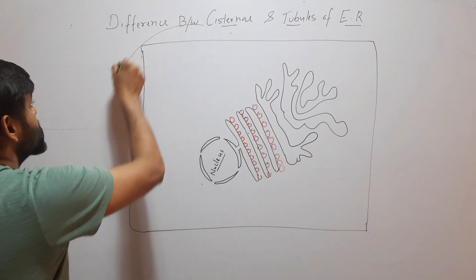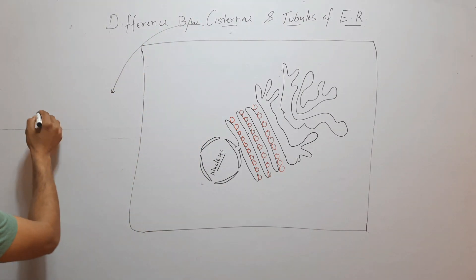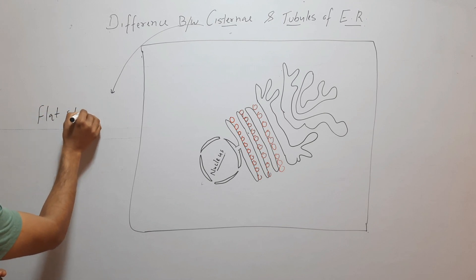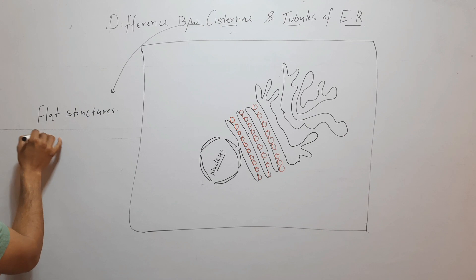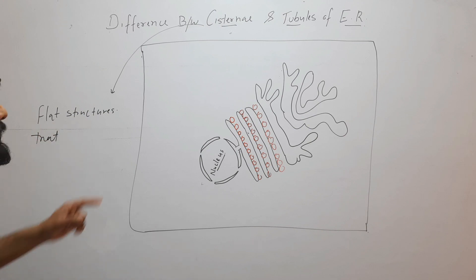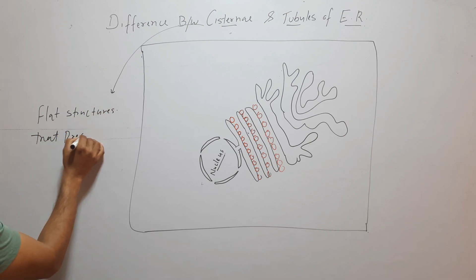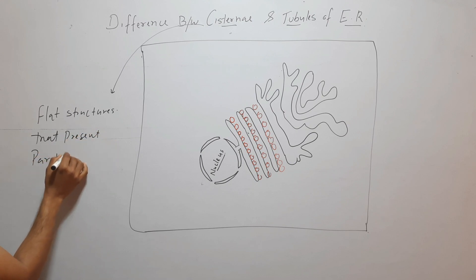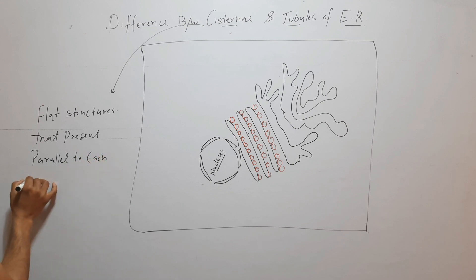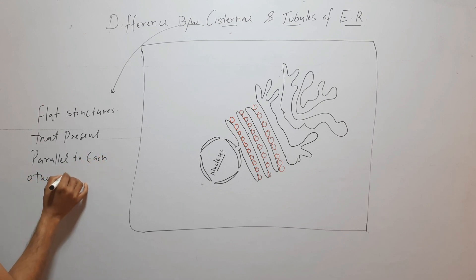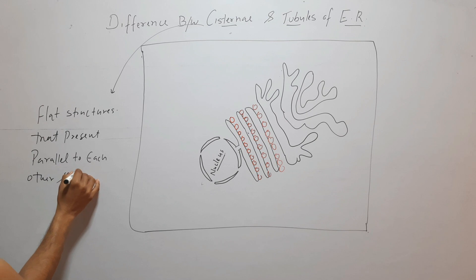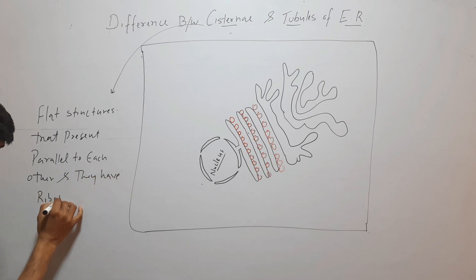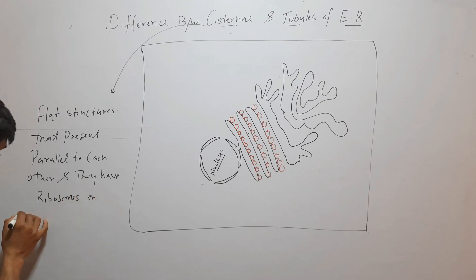First, we will discuss cisternae. Cisternae are flat structures that are present parallel to each other, and they have ribosomes on them.